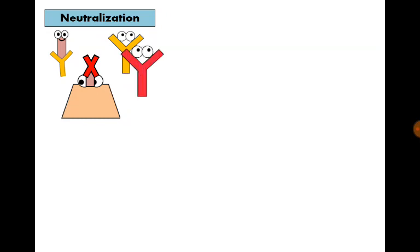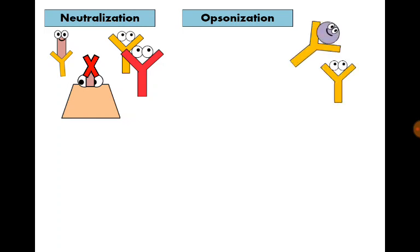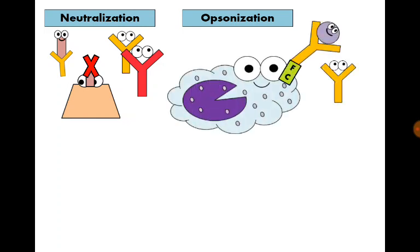Functions of immunoglobulins include first neutralization of organisms by attaching to them and preventing their attachment to cells. Immunoglobulin G and immunoglobulin A can do that. Opsonization: binding to a pathogen and attachment by the other side to Fc receptor on the surface of a phagocyte helping phagocytosis. This is immunoglobulin G function.